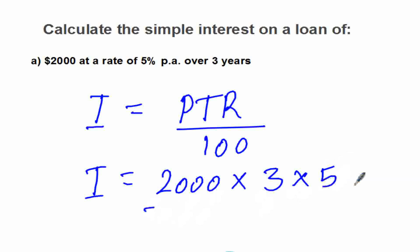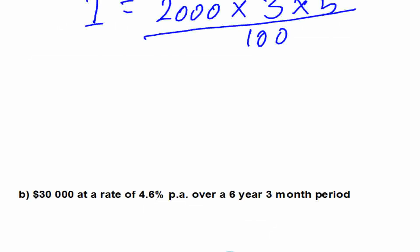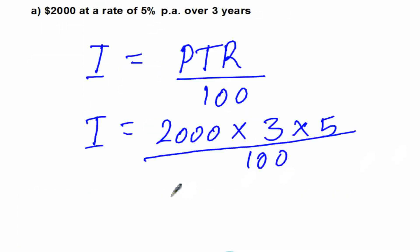Over 100—that's where the percentage comes in. Then we shall be having these zeros canceling with these zeros, and you're left with 20 times 3 times 5, which is 300 dollars.